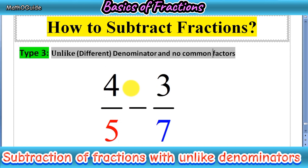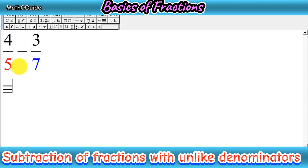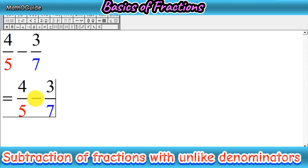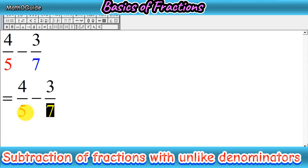In Type 2 there was some common factor in the denominator, but here we have the question 4 over 5 minus 3 over 7. Both 5 and 7 are different and they have no common factors. The method is very similar to Type 2 — you have to make the denominators equal to each other. You can see that we have 5 and 7, so rewrite the given expression as 4 over 5 minus 3 over 7.